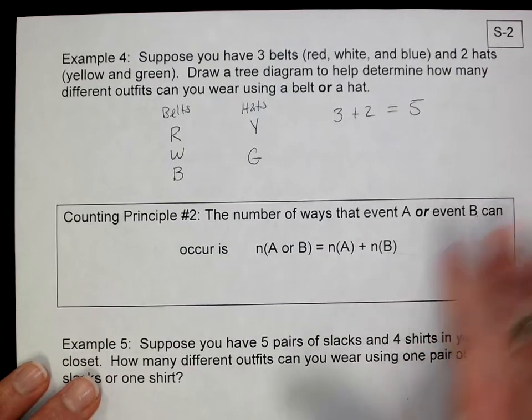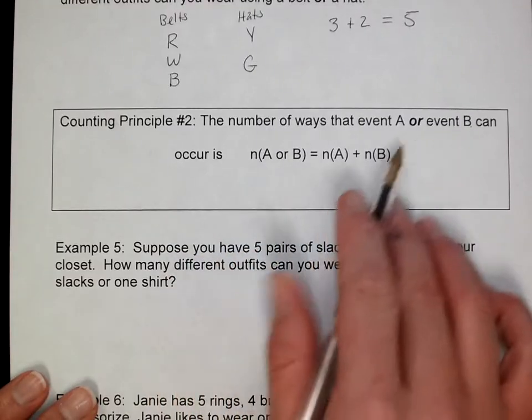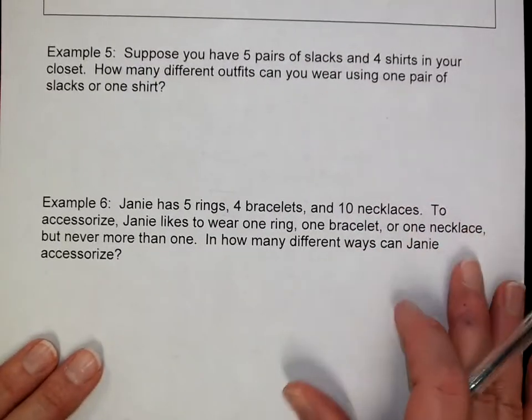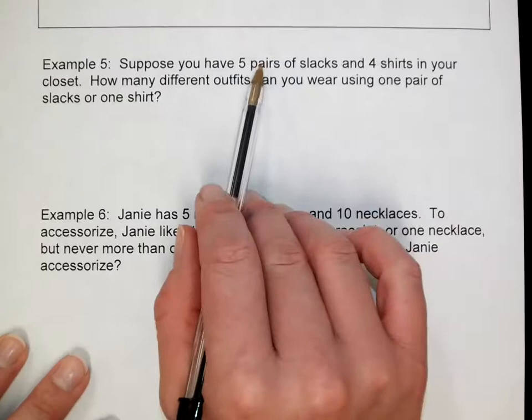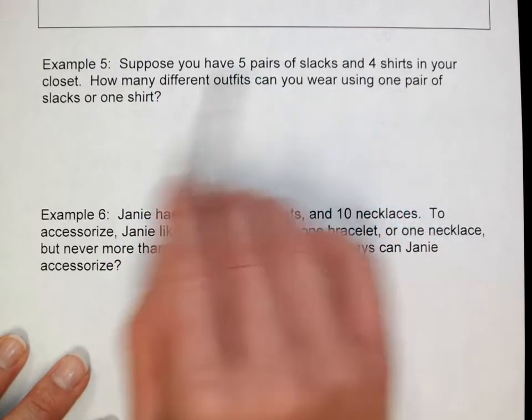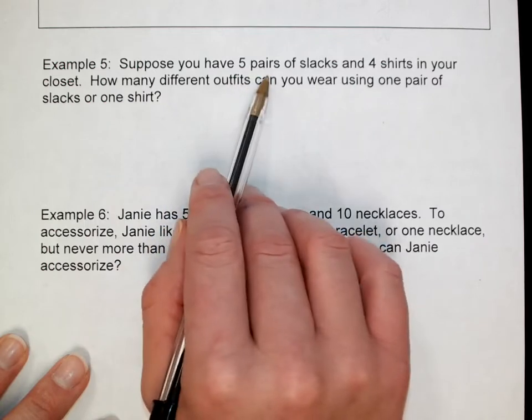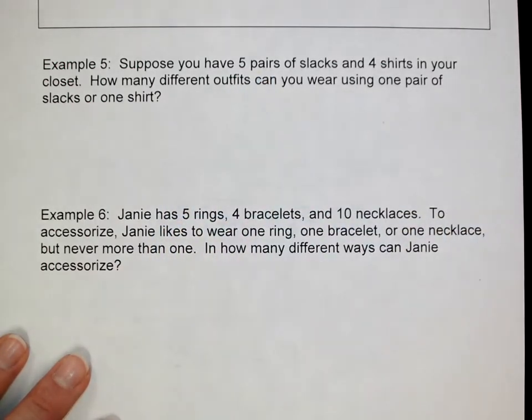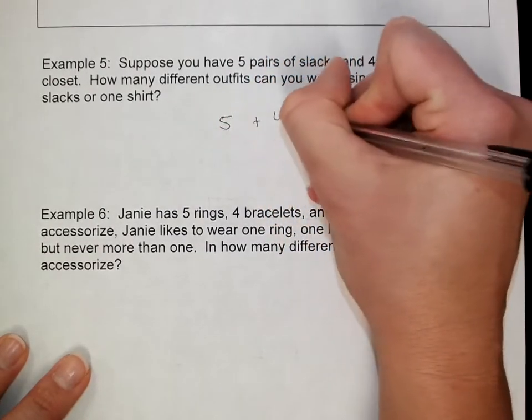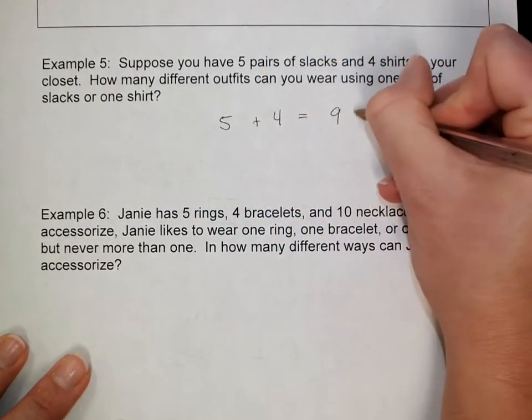So for 'or' events, you just add the possibilities for each. Suppose you have five pants and four shirts. How many different outfits can you wear using one pair of slacks or one shirt? Now tell me how much this actually makes sense, because you're not going to wear one pair of slacks or one shirt. But you have five pants plus four shirts, which is nine total.